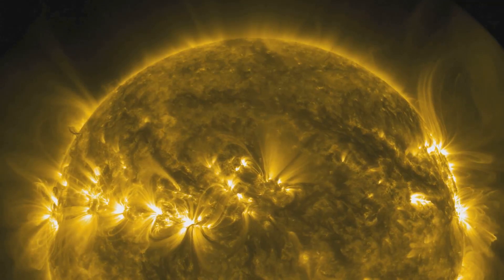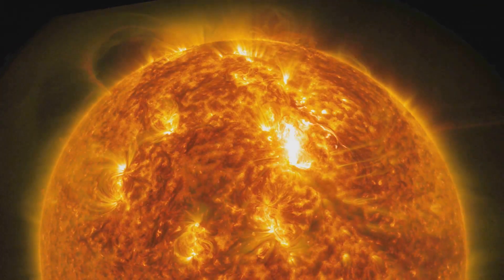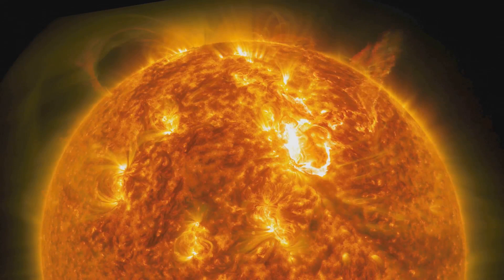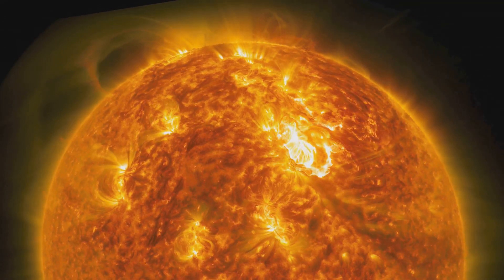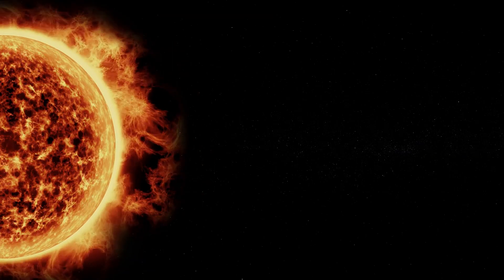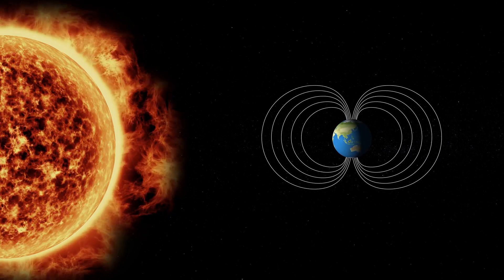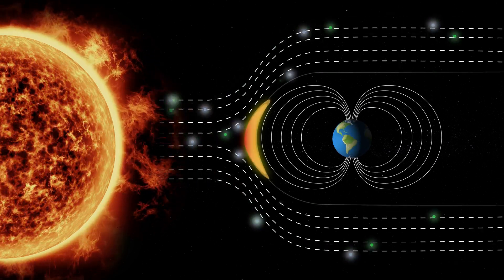These immense voids on the Sun's surface, known as coronal holes, have a fascinating formation process. They occur when the Sun's normally closed magnetic fields abruptly open. This sudden shift allows the upper solar surface content, a hot plasma, to escape into space, creating a stream of particles we call the solar wind.